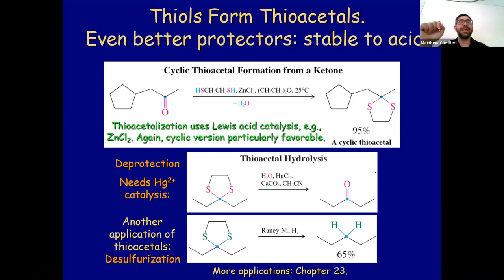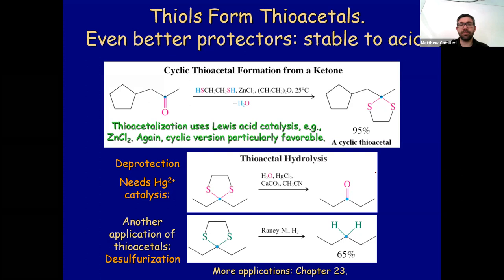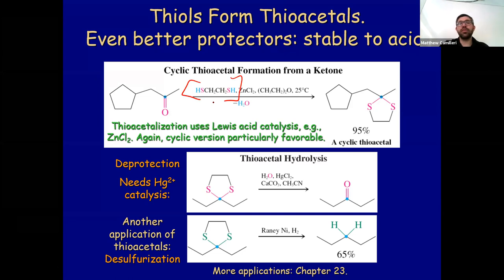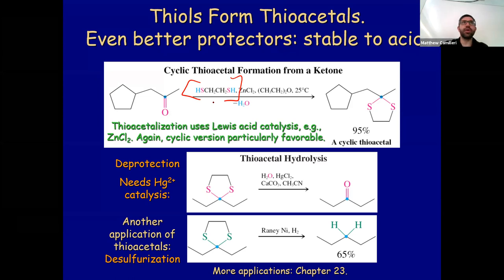Thioacetals can also be reduced to the alkane. If you have a carbonyl and want to reduce it to the alkane, you first protect it by reacting with ethanedithiol — these are thiols. Once that reaction is done, you reduce with Raney nickel and hydrogen to form the alkane. This is a good way to remove the C double bond O. You've also done a similar reaction with zinc in mercury and HCl.